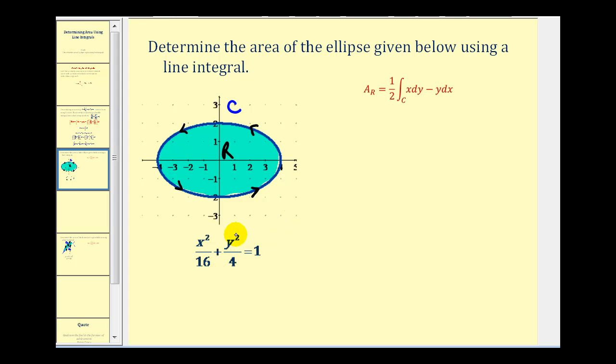So to set up this line integral, we'll parameterize our curve in terms of t and then perform substitutions for x dy and y dx. So looking at our equation of the ellipse, if we let x equal four cosine t and y equal two sine t, we would satisfy the equation of the curve.